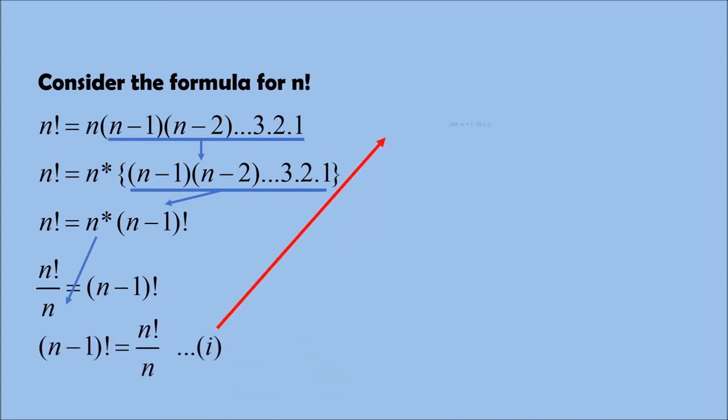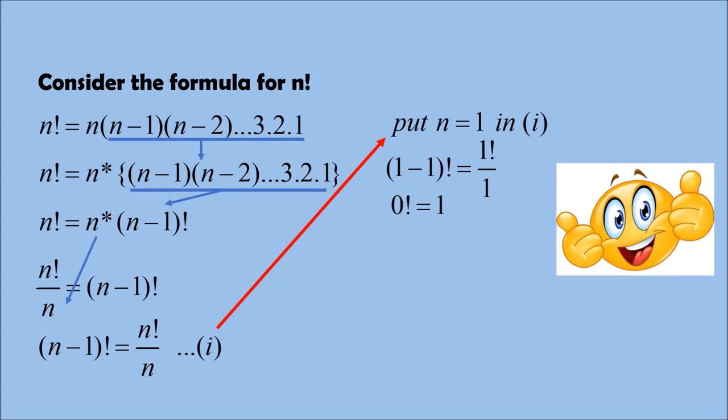Call it as equation number 1 and substitute n is equal to 1 in this equation. So 1 minus 1 factorial is equal to 1 factorial by 1. 1 minus 1 is 0, so 0 factorial. 1 factorial is 1, so 1 divided by 1 is equal to 1. Yes, we proved.